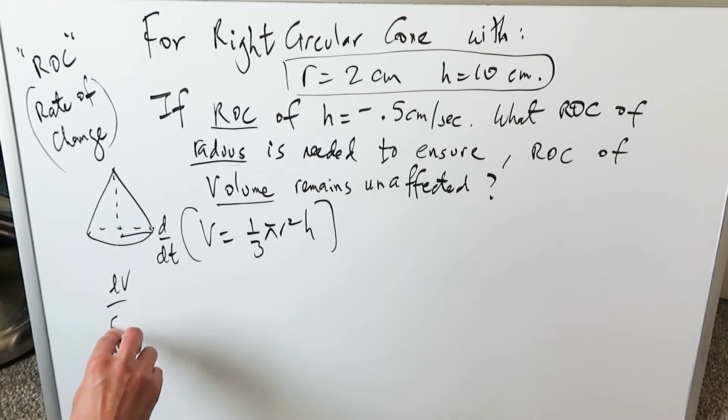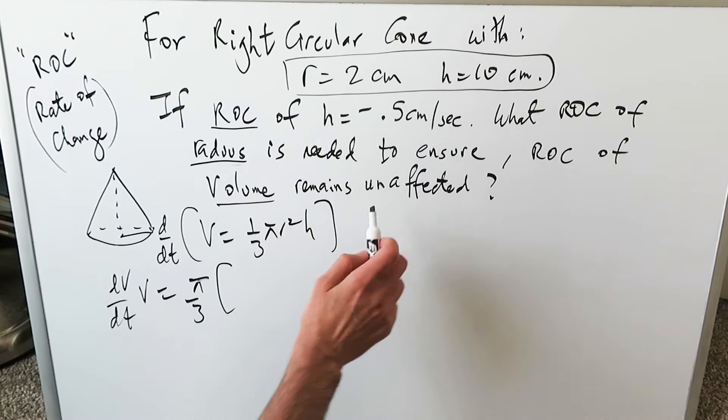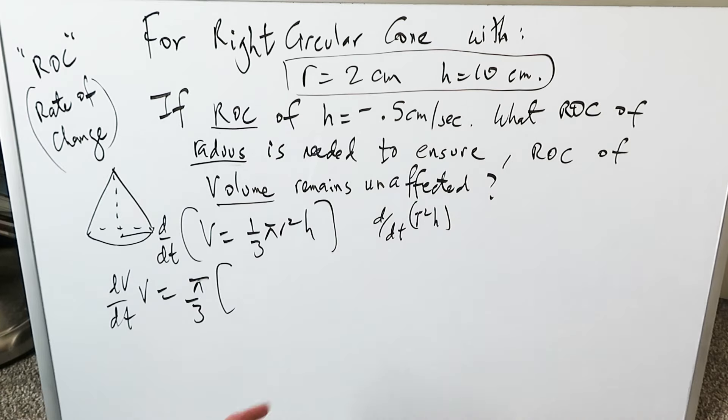You would essentially apply your derivative to your variables. The constant can be pushed out as you can see right over here. Then you would have to do the derivative d/dt of r² h, which is a product of two functions. You know a product of two functions brings in the product rule.